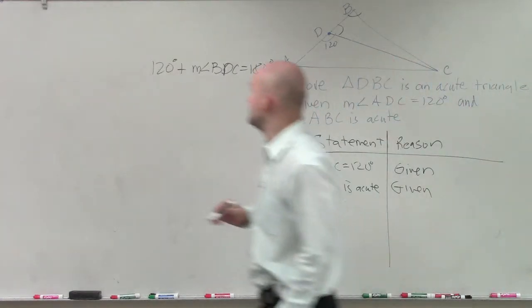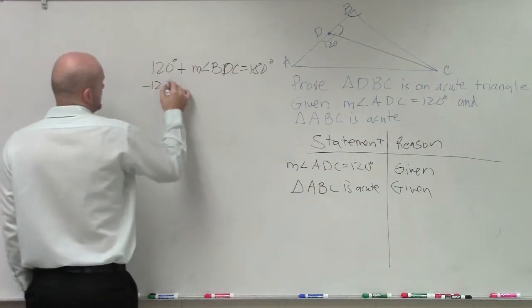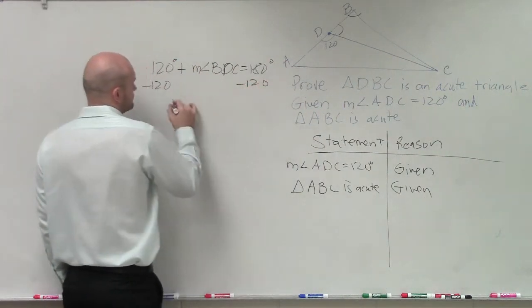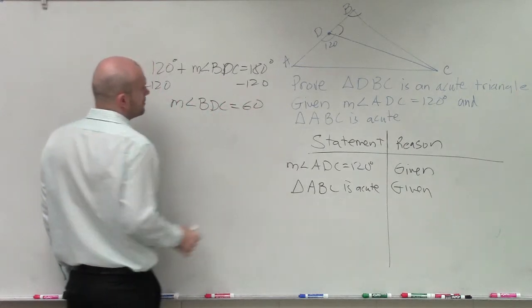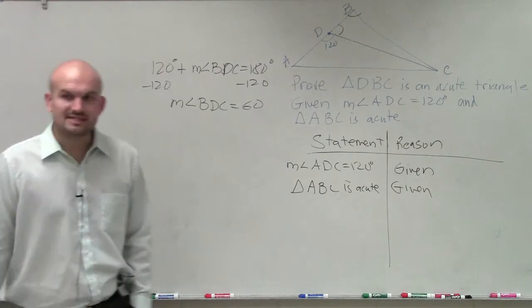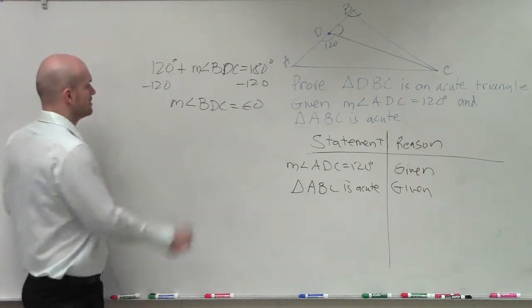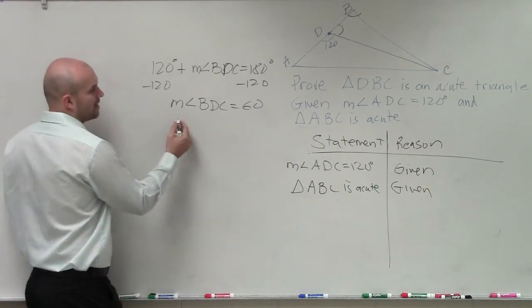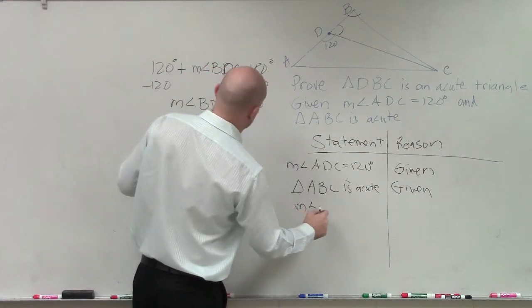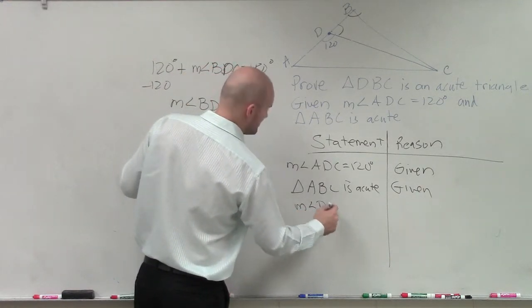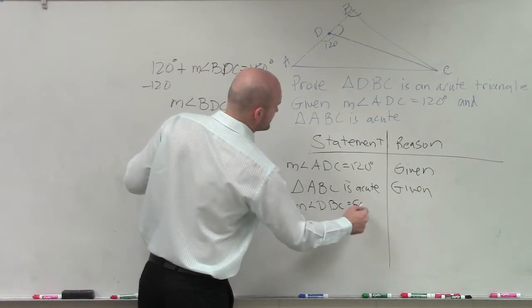So now, let's solve for the measure of BDC. Subtract 120. That equals 60 degrees. So therefore, the measure of angle DBC is equal to 60 degrees. So I can write measure of angle DBC is equal to 60 degrees.